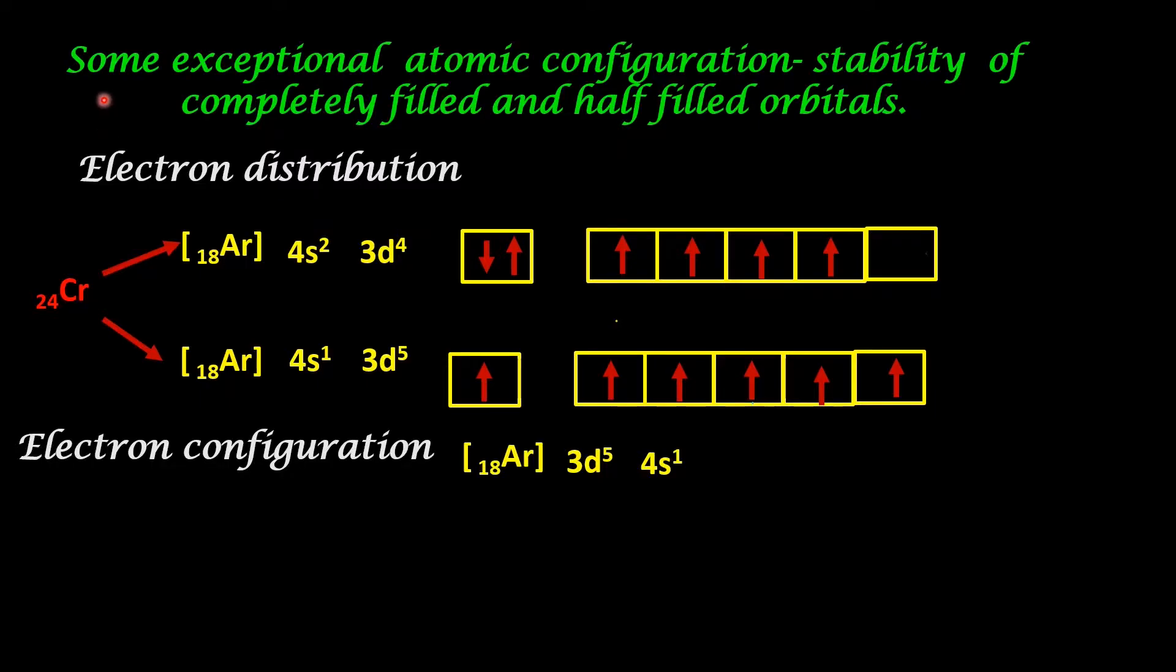Let us see the topic. Some exceptional atomic configuration. That is, some atoms having exceptional atomic configuration, slightly different from the normal pattern. Here also, the three rules, namely, Aufbau principle, Pauli exclusion principle and Hund's rule is followed. In addition to that, some elements show some more deviation for stability.